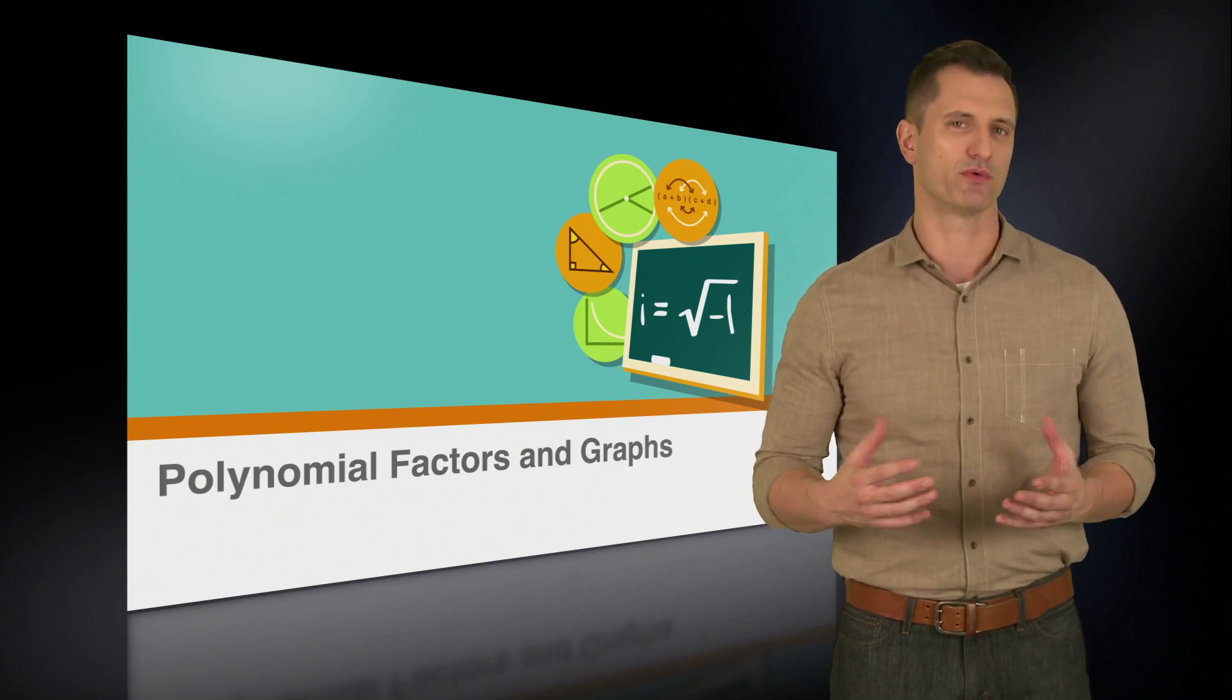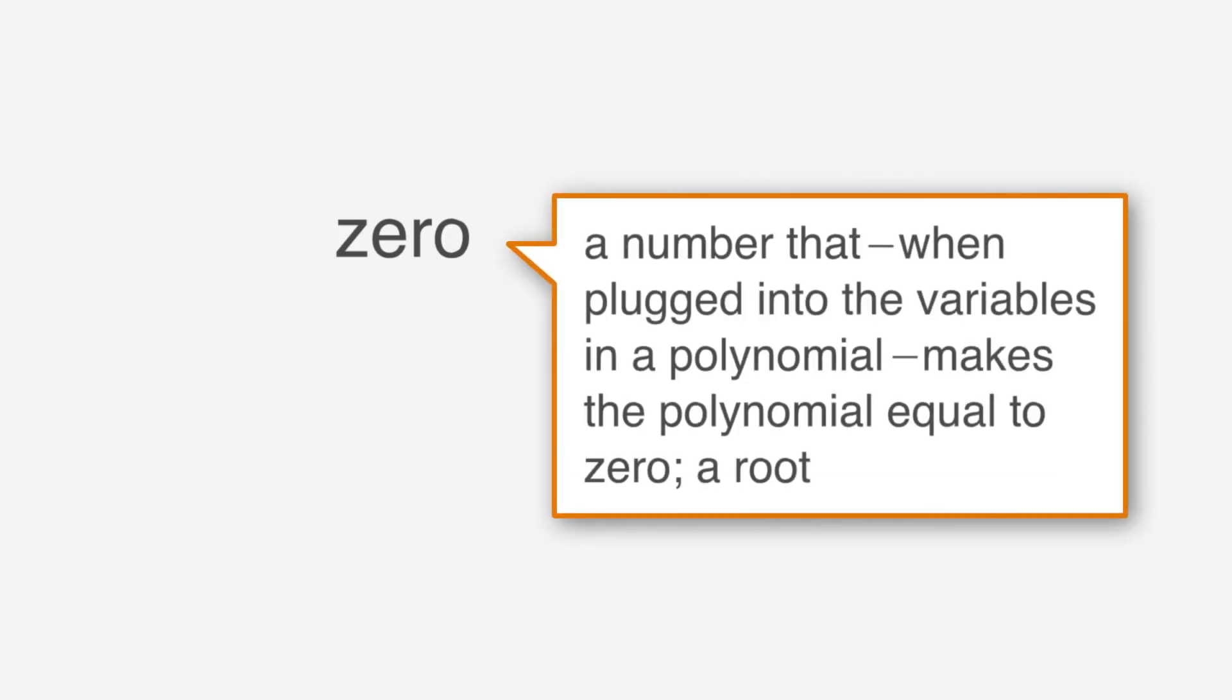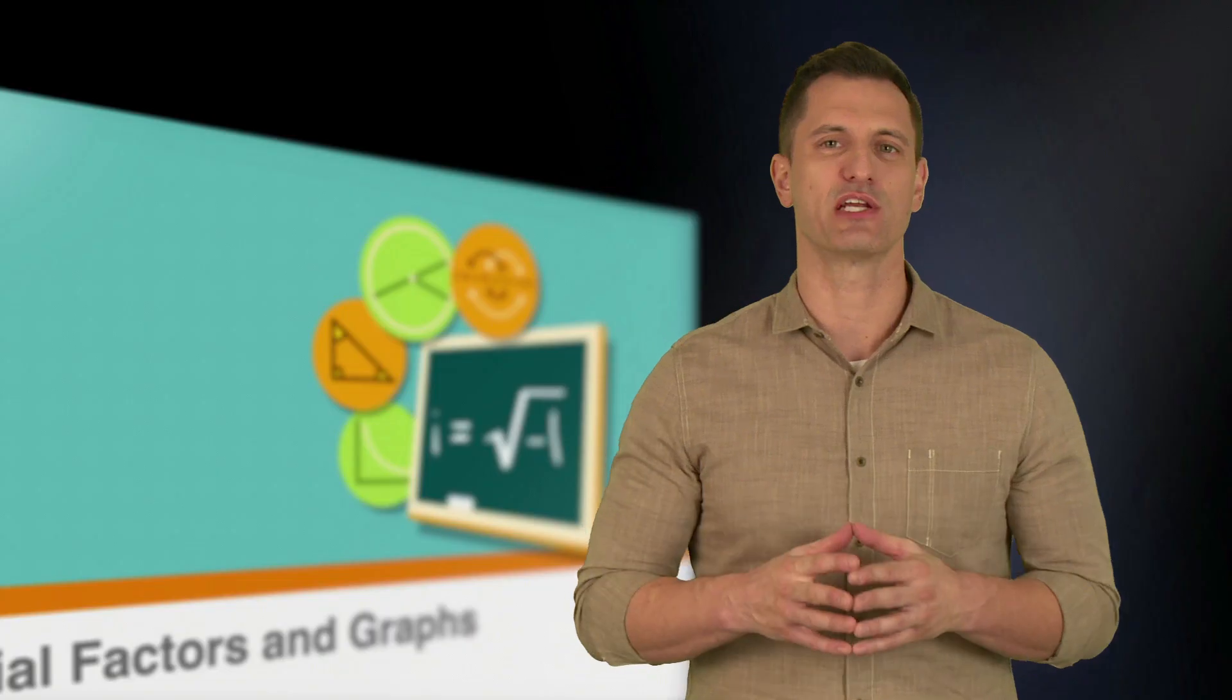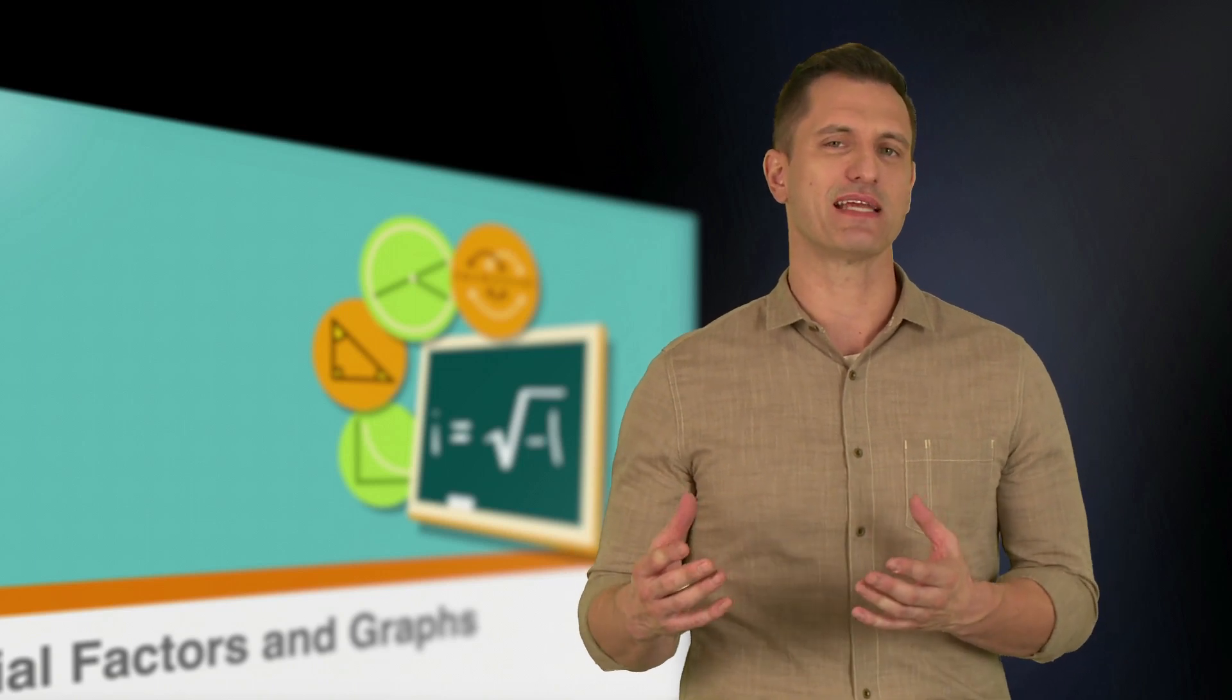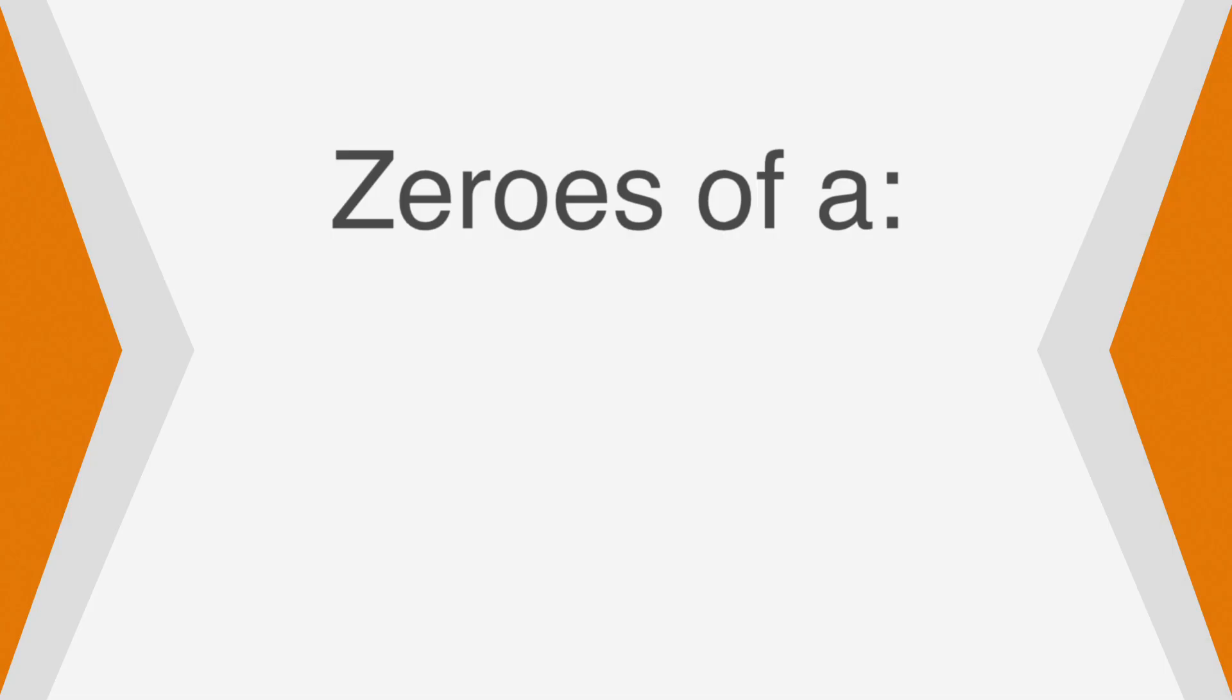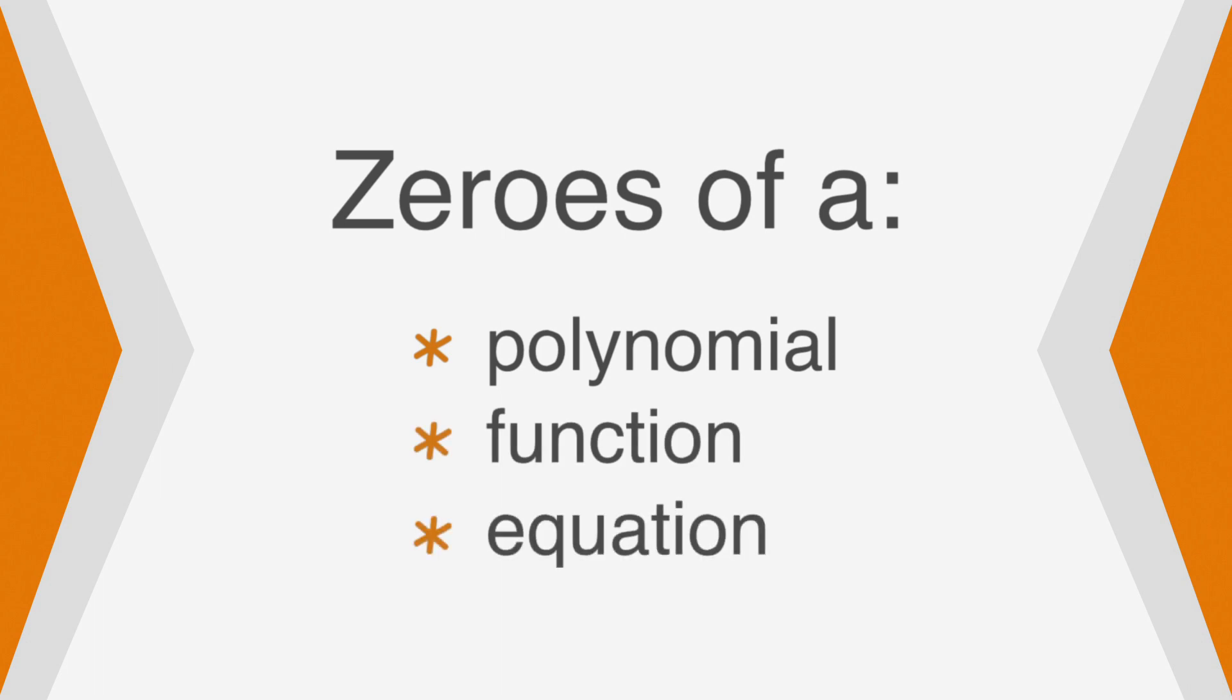But what's a zero? A zero is a number that, when plugged into the variables in a polynomial, makes the polynomial equal to zero. A synonym for zero is root. Asking for the zeros of an equation is the same thing as asking for its roots. And since we're on the topic of synonyms, take note that the SAT could ask you for the zeros of a polynomial, a function, or an equation. It's all the same thing, at least as far as you're concerned for the SAT.